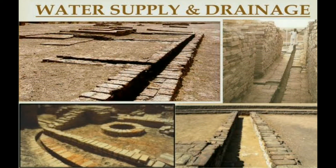The drains were made of kiln-fired or baked bricks and were usually covered. They had a slight slant so that water could easily flow, and these drains were connected to the main drain in the street.